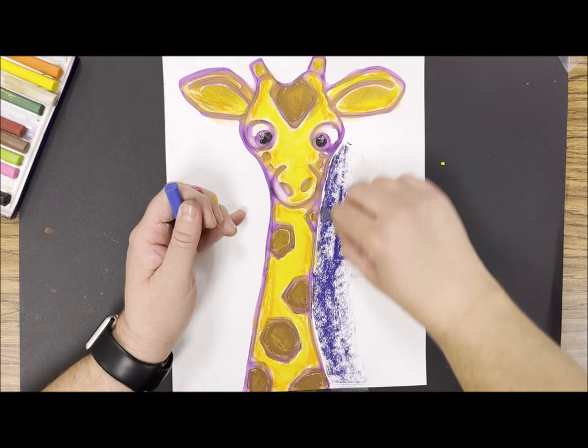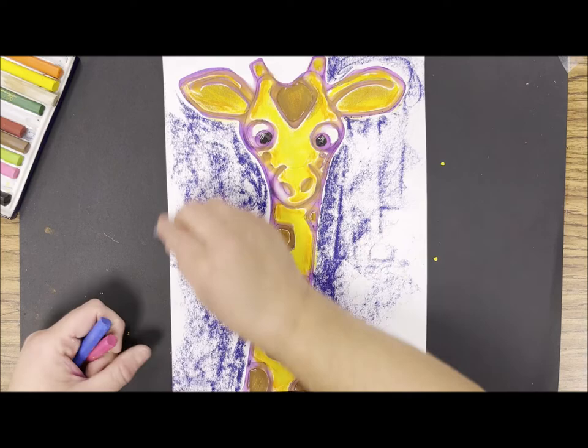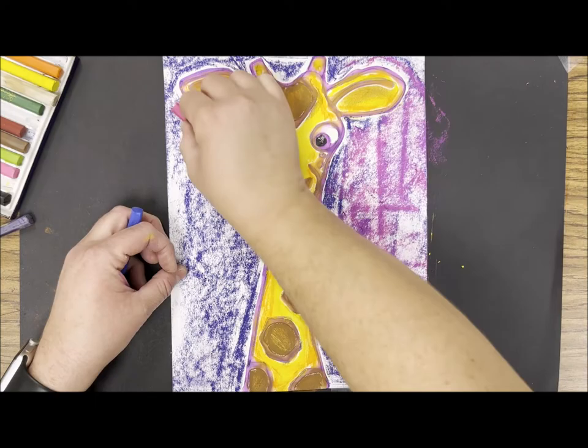For the background I've picked out some cool colors like blue, purple, and some pink. I'm going to gently shade all three colors overlapping a little bit and then blend them together with my fingers.